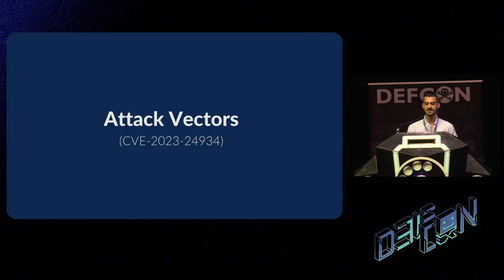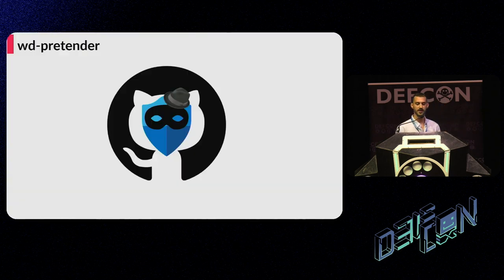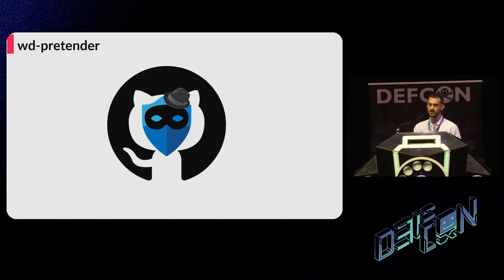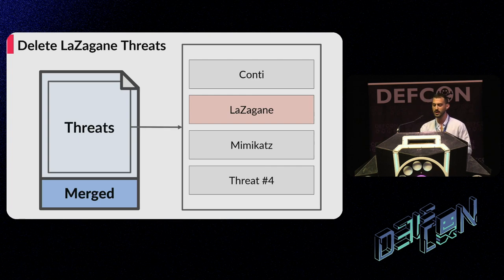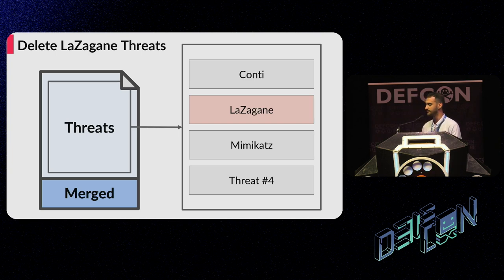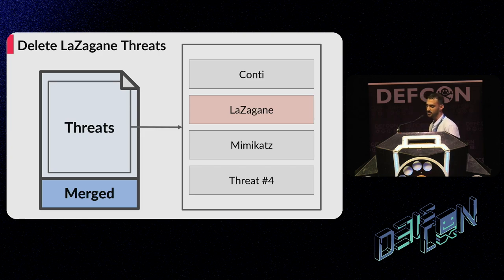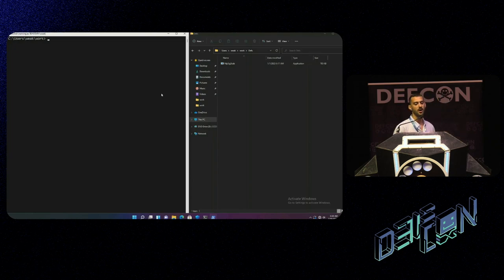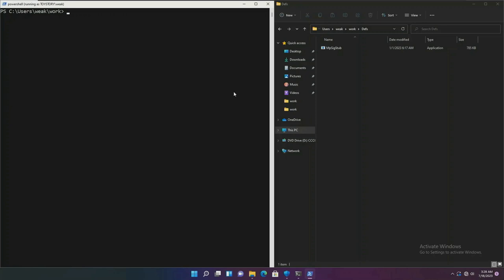It's crazy. Let's see what we can do with this capability. We will explain three attack vectors. We have developed a fully automatic tool called WD Pretender, which stands for Windows Defender Pretender. This tool supports all the attack vectors we are going to present, and we will share the GitHub link at the end of the talk. The signatures of Defender result from merging the delta file and the base file. The database files are composed of threats, and each threat has a name from which we can infer its purpose. What will happen if we delete all the threats that contain the keyword 'Lazagne' in their names?